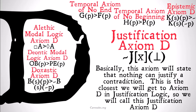Basically this axiom states that nothing can justify a contradiction. This is the closest we're going to get to axiom D in justification logic, so we're going to call it justification axiom D, even though it doesn't perfectly map onto our other logical versions of axiom D for different modal logics.